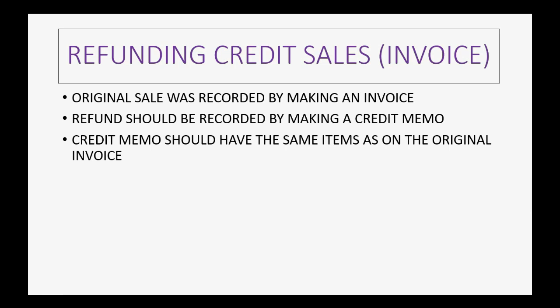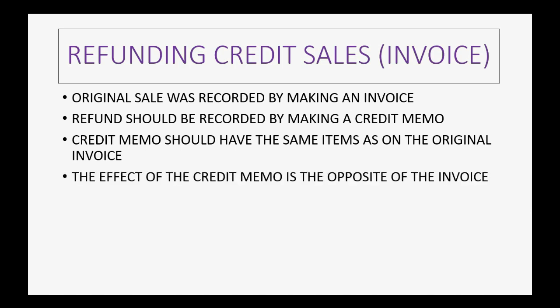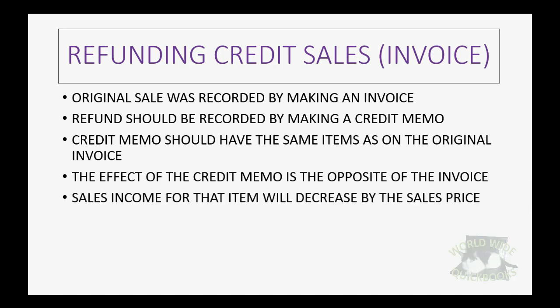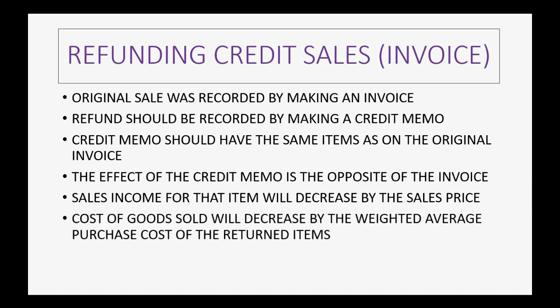The credit memo should have the same items as on the original invoice. The effect of the credit memo is the opposite of the invoice: the sales income for that item will decrease by the sales price of the items returned, the cost of goods sold will decrease by the weighted average purchase cost of the returned items, and the inventory quantity will increase.